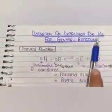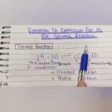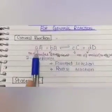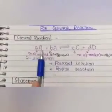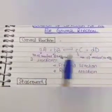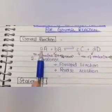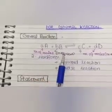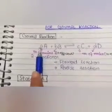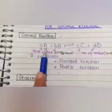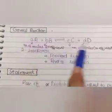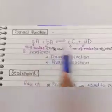Next, we will derive the expression for the general reaction. Now we will consider a reaction with coefficients: aA + bB ⇌ cC + dD. We add the number of moles — 1, 2, 3, etc. — and call them coefficients. The coefficient represents the number of moles. For example, if we add coefficient a for reactant A and b for reactant B, and c and d for products C and D.